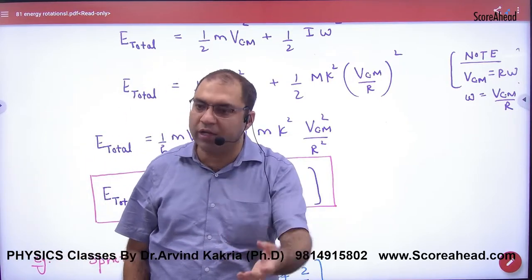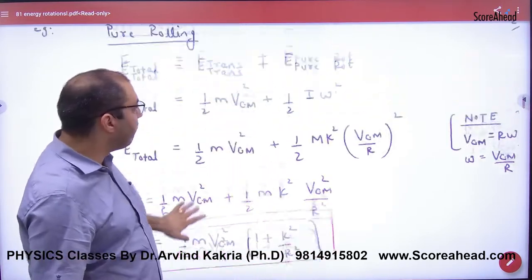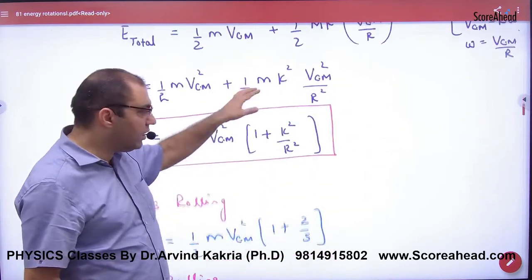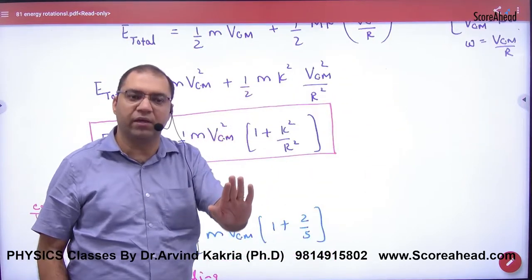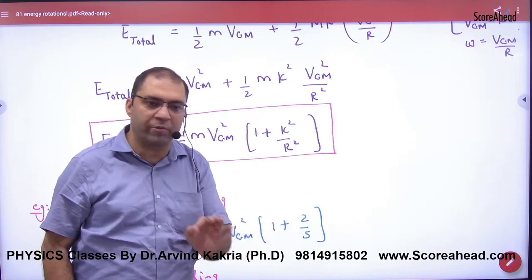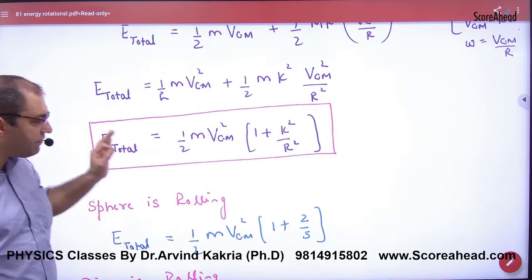When someone rolls, either you put this formula, or just put this formula straight. The thing is one and the same: ½mV_cm² times (1 + k²/r²). This formula is useful for this.